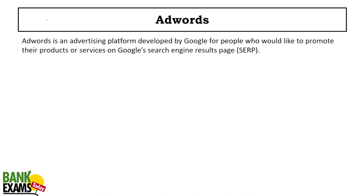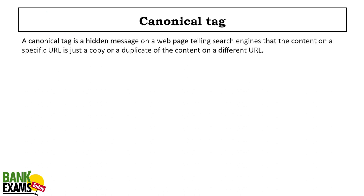AdWords — the name has been changed and is now called Google Ads. Advertisers can go on Google Ads and pay for their campaigns. Publishers can register on AdSense and advertisers can register on Google Ads.